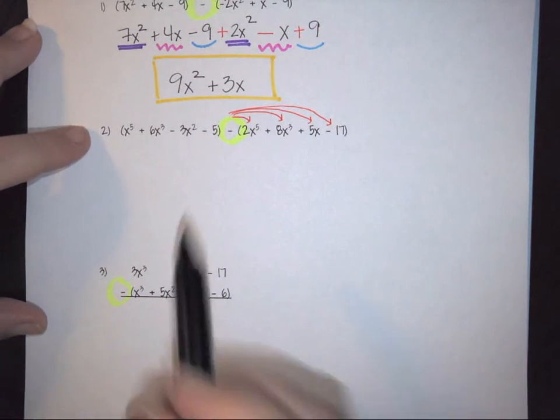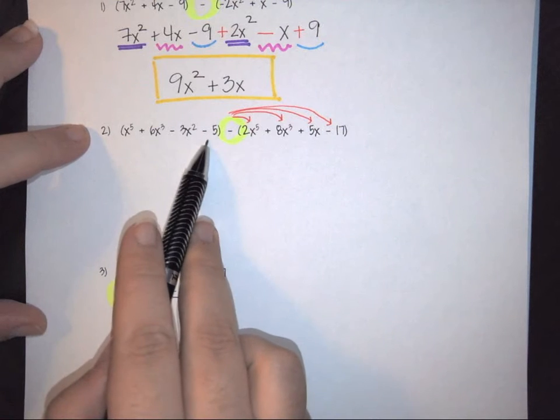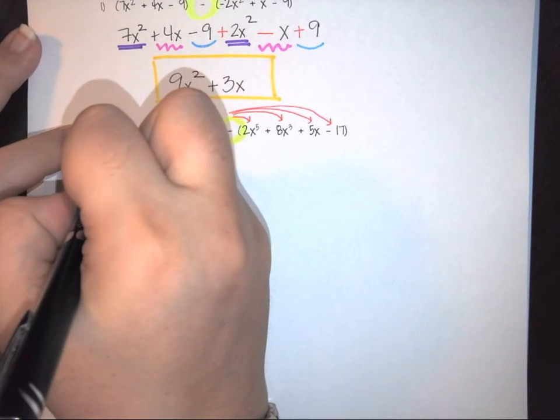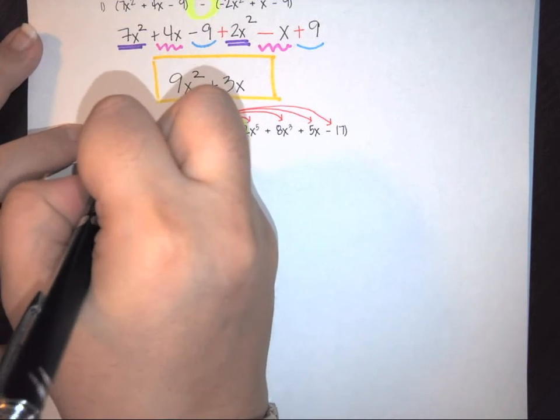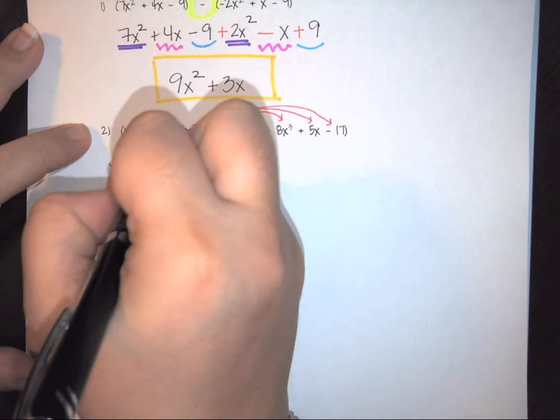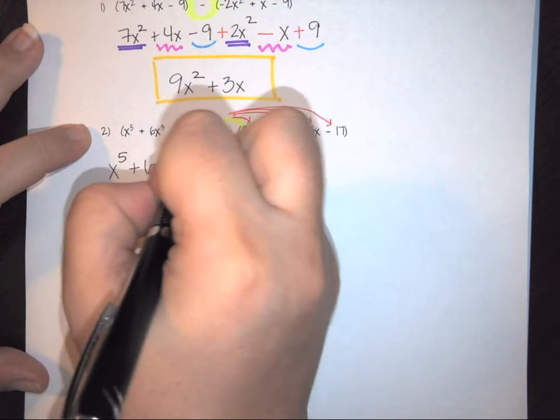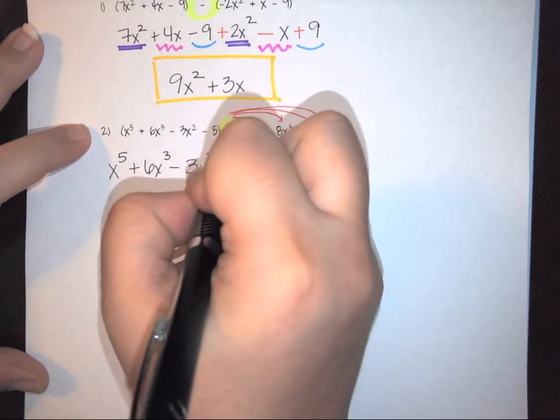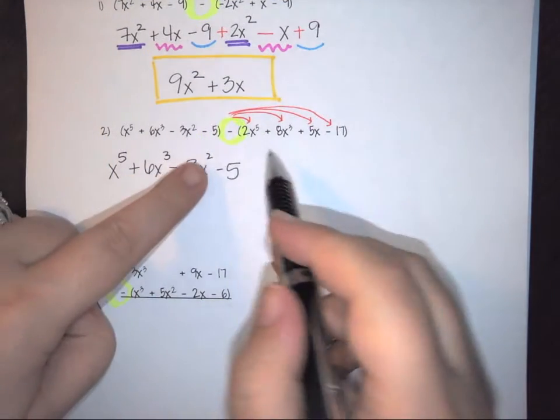So in this case, there happens to be four terms. My front parentheses remains the same. So this is going to be x to the fifth plus the 6x cubed minus the 3x squared minus the five.